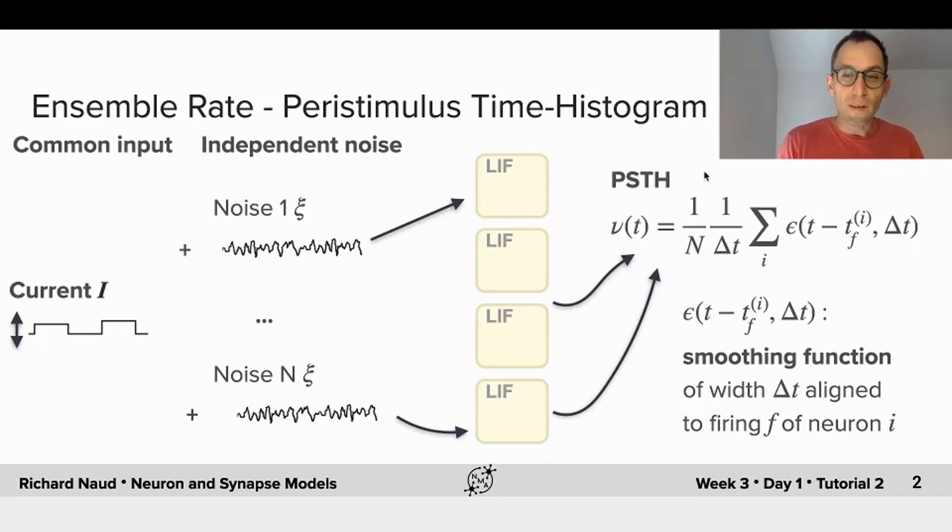The equation looks like this. And what this is, is we take a smoothing function, which is just there to take into account the fact that it doesn't matter so much whether a spike is one or two milliseconds away from its time. So we allow for some jitter. And so for every spike from every neuron, we will sum this smoothing function. And then we'll divide by the number of neurons and the size of that smoothing function to get a rate in Hertz.